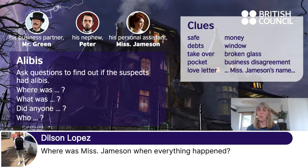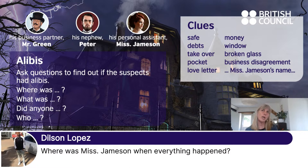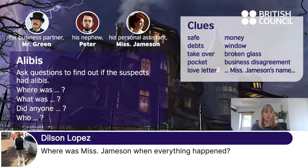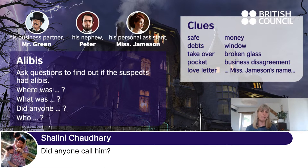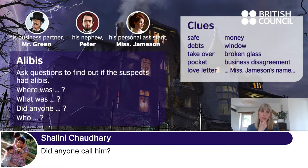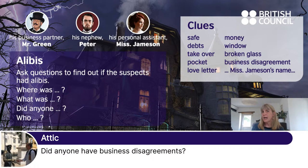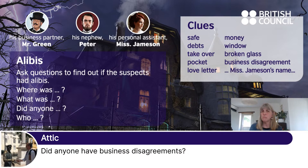Where was Miss Jameson when everything happened? She was in her office just outside Mr. Gregory's study, and she was working late at the time. 'Did anyone call Mr. Gregory?' — nobody called Mr. Gregory. 'Did anyone have business disagreements?' — yes, Mr. Green had had quite a lot of arguments with Mr. Gregory in the months before this happened. I think Mr. Green wanted to take over the business — he wanted to take control.